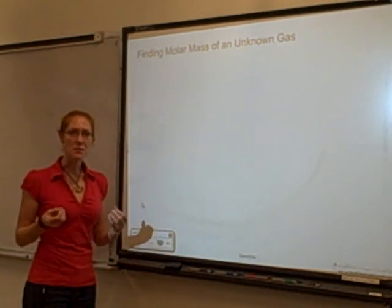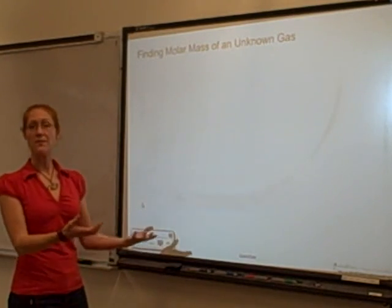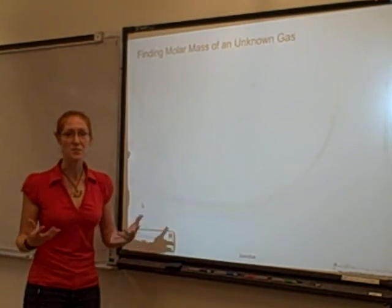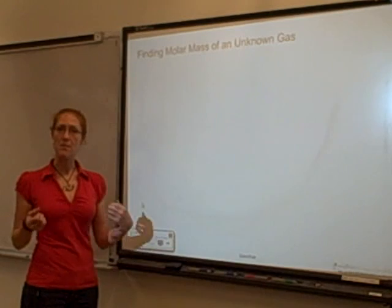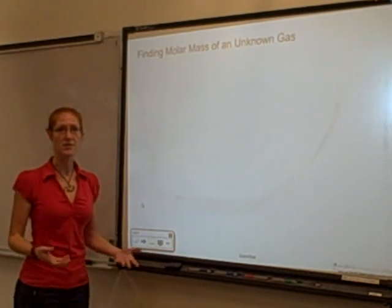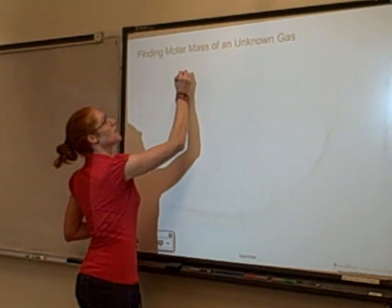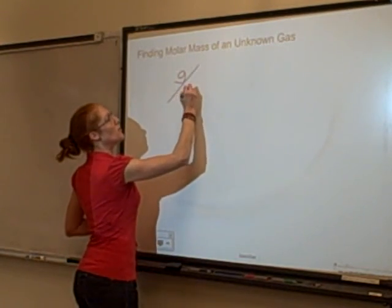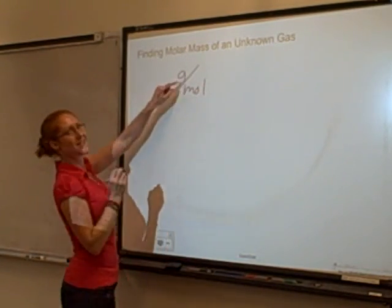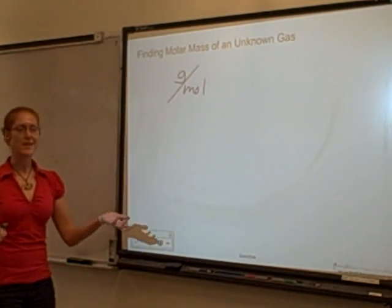So in lab, it's pretty easy to collect a gas. Like if you have a reaction that's going to produce a gas, it's pretty easy to collect the gas and get the mass of that gas that you've collected. So that's your grams. And molar masses are always how many grams per mole do you have? Well, this thing is easy. You get the grams from just massing it.